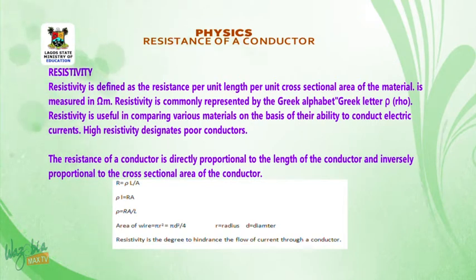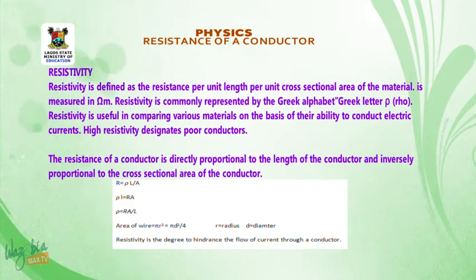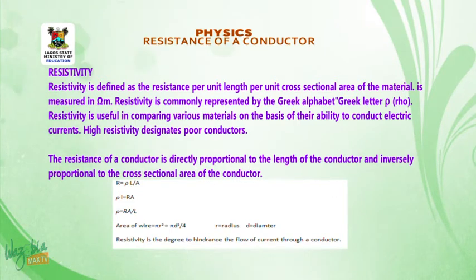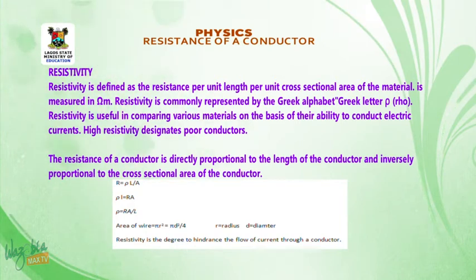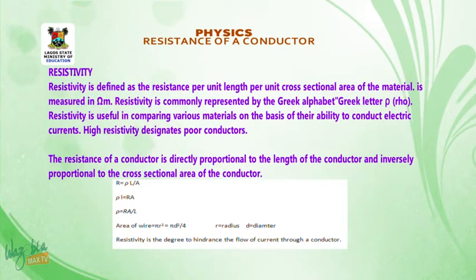The resistance of a conductor is directly proportional to the length of the conductor and inversely proportional to the cross-sectional area. Mathematically: R equals ρ × L divided by A. Cross-multiplying: ρ × L equals R × A. Making ρ the subject: resistivity equals R times A divided by L.